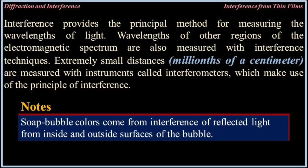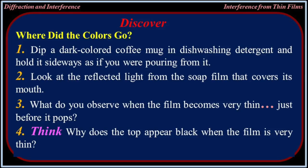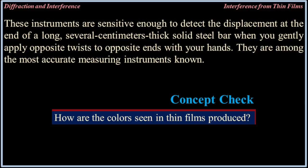Soap bubble colors come from interference of reflected light from inside and outside surfaces of the bubble. Activity — Where did the colors go? Dip a dark-colored coffee mug in dishwashing detergent and hold it sideways. Look at the reflected light from the soap film covering the mouth. What do you observe when the film becomes very thin just before it pops? Why does the top appear black when the film is very thin? These interferometers are sensitive enough to detect a displacement in a long solid steel bar when you gently apply opposite twists to opposite ends with your hands — they are among the most accurate measuring instruments known.